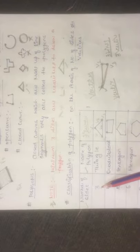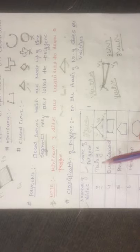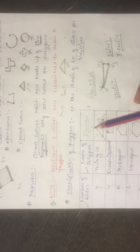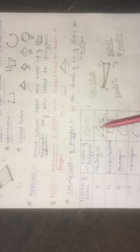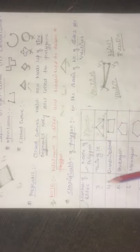Number of sides and the name of the polygon formed: if we have three sides, the polygon formed is a triangle - three vertices and three lines. Four sides gives a quadrilateral. Five sides gives a pentagon. Six sides gives a hexagon. Seven sides gives a heptagon. Eight sides gives an octagon, and so on.